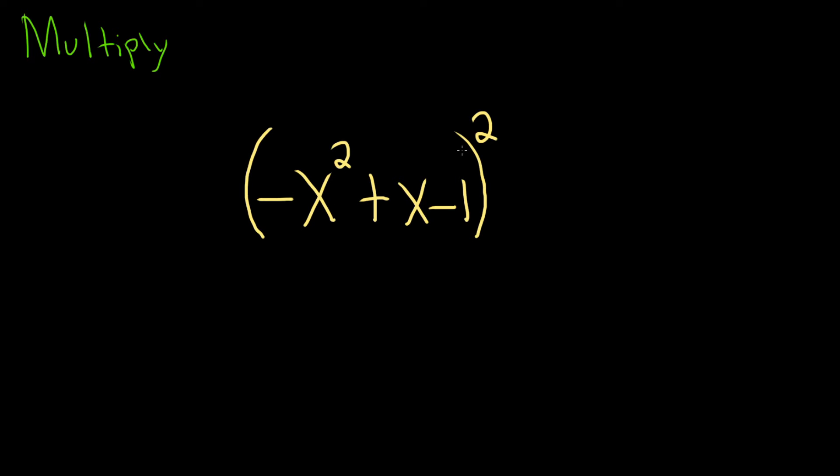Okay, so we have this polynomial and it's being squared and we have to multiply it out. This is called a trinomial because we have three pieces.